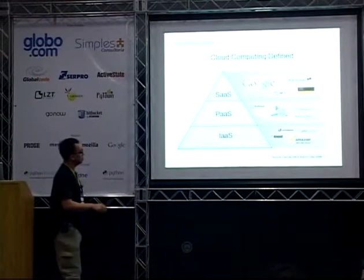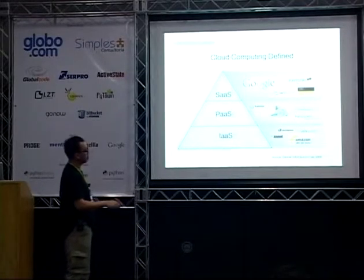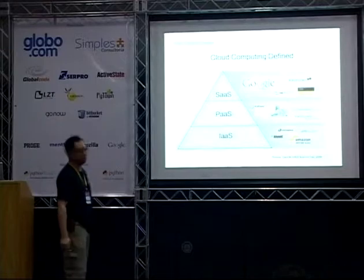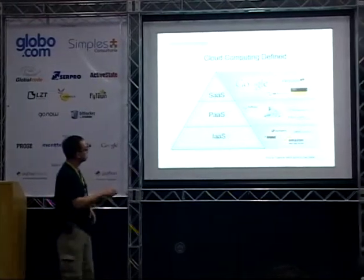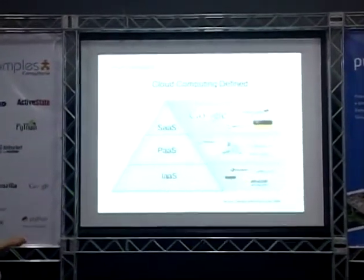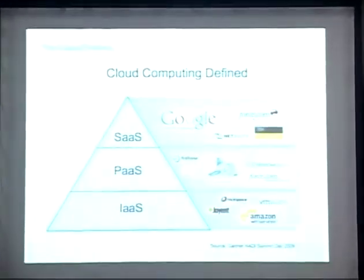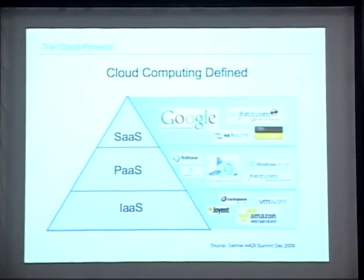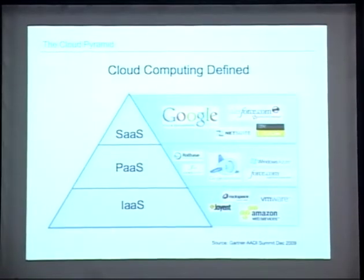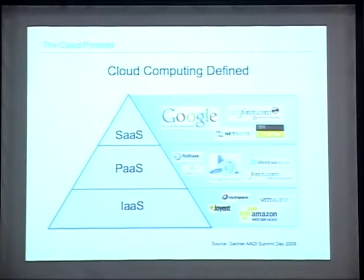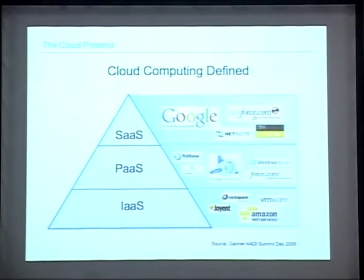Analyst company Gartner categorized cloud computing into three areas. Software as a Service means you have an application that requires a web browser to use — Gmail, Google Docs, Salesforce. You have to be connected to the internet. You have no control over the software, the operating system, the hardware — only maybe your account configuration settings.